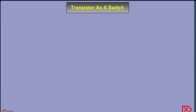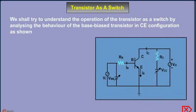We shall try to understand the operation of the transistor as a switch by analyzing the behavior of base-biased transistor in the CE configuration as shown in the circuit diagram.